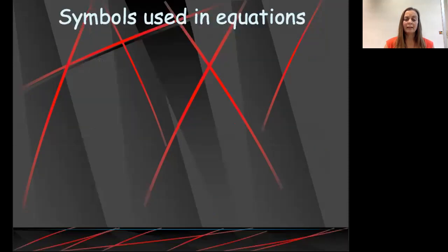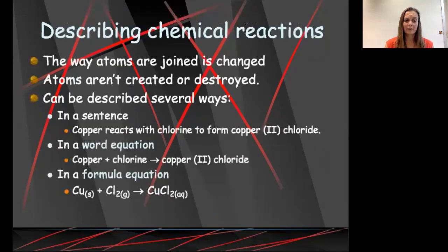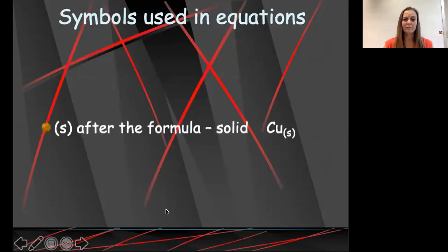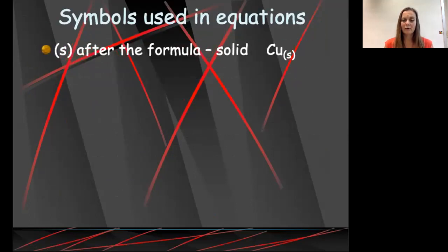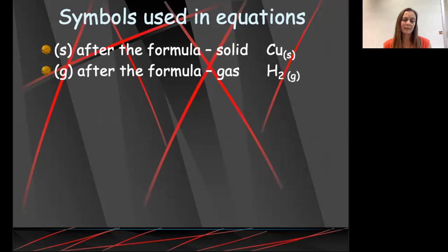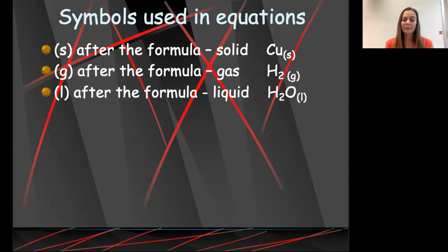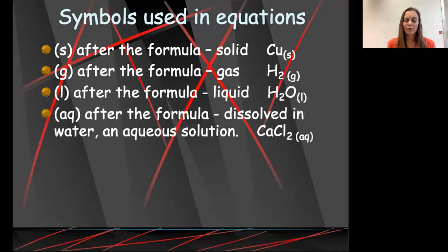If we look at that last equation, there were some symbols in there. Let's talk about what those symbols are and what they mean. When we have the letter (s) in parentheses after a formula, that means that the substance is a solid. So this would be solid copper. If we have a (g) after the formula in parentheses, that means that the substance is in the gaseous form. So here we would have gaseous hydrogen. If we have an (l) after the formula, that means that it's in the liquid state. So here we have liquid water. If we have (aq) after the formula, that means that it is dissolved in water. We call this an aqueous solution, so hence the aq.